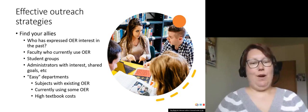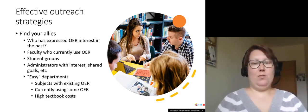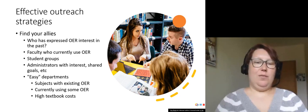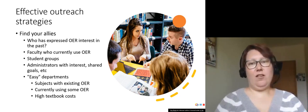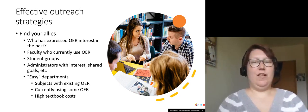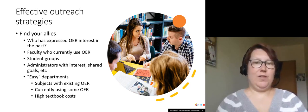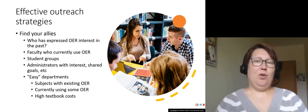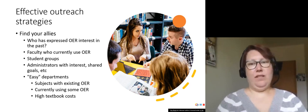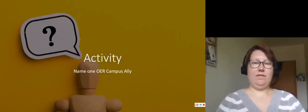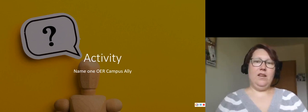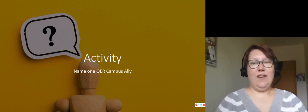And quote-unquote easy departments. These could be subjects with existing OER usage, ones that aren't currently using OER but where there's great existing content out there — for example, math — or ones that are heavily affected by high textbook costs, depending on the publishers they're using. Now pause and name one OER campus ally that you're aware of. When you're ready, unpause.